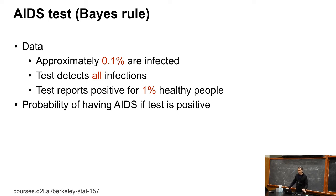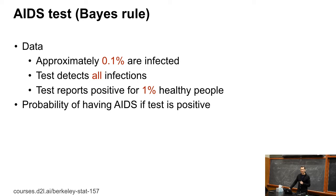Let's look at an AIDS test. Let's assume that about 0.1% of the population are infected — the numbers in the United States are lower, but let's assume that because the math looks a bit nicer; in sub-Saharan Africa the numbers would be a lot higher. Let's assume I have a test that really detects all infections, but it has a false positive rate where for 1% of all healthy people it says they have AIDS. What are the chances that somebody actually has AIDS if the test comes back positive? Try working that out on a piece of paper.